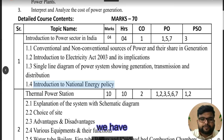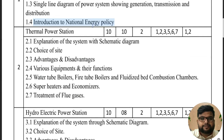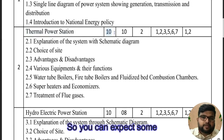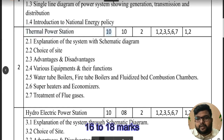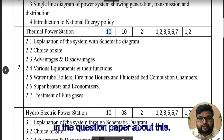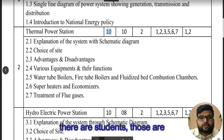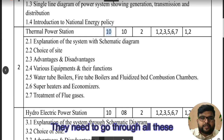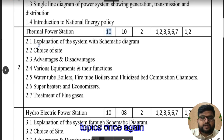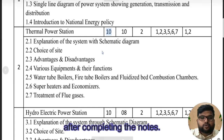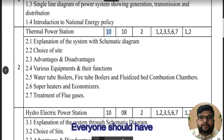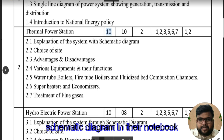Moving to chapter two — thermal power plant — which has ten marks, so you can expect sixteen to eighteen marks of questions in the paper. I am focusing on marks because directly-admitted secondary students need to go through all these topics once again after completing the notes. The first point is the explanation of the system with a schematic diagram — everyone should have drawn the schematic diagram in their notebook, and we also did the activity of drawing the finger-line and schematic diagram on paper.